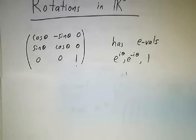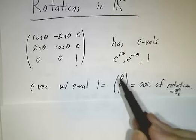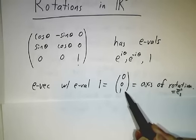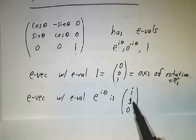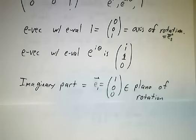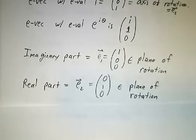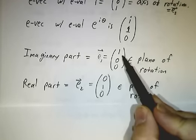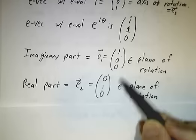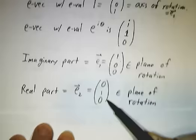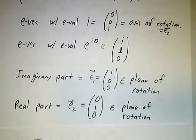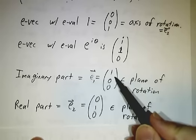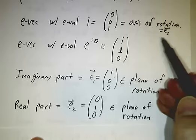The eigenvector with eigenvalue 1 is (0, 0, 1), and that gives us our axis of rotation. The eigenvector with eigenvalue e^(iθ) is (i, 1, 0). If you look at its imaginary part, that's (0, 0, 0) — wait, the real part is (0, 1, 0). If you take the cross product of the imaginary part with the real part, e1 cross e2, you get e3, which is the axis of rotation. This is the signature of a counterclockwise rotation: the imaginary part of the e^(iθ) eigenvector crossed with the real part gives you the axis.